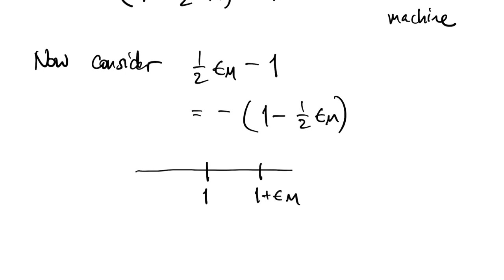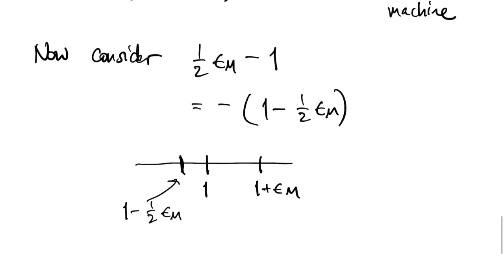the next number is epsilon machine away, but in the backwards direction, it's only half that far away. And so that is a floating point number. 1 minus 1 half epsilon m is in the floating point set.